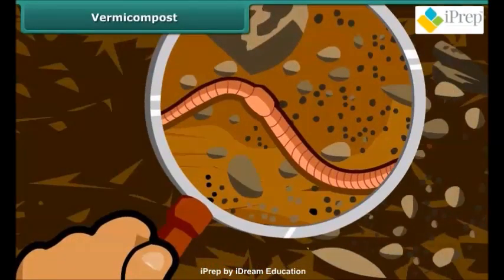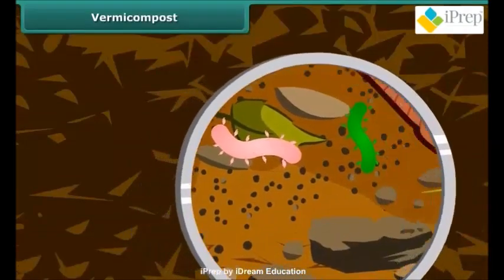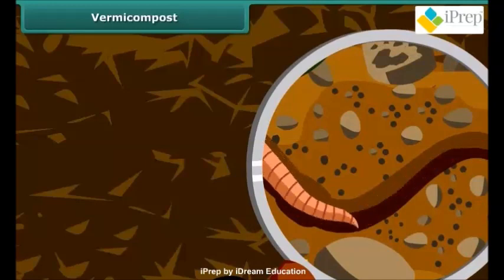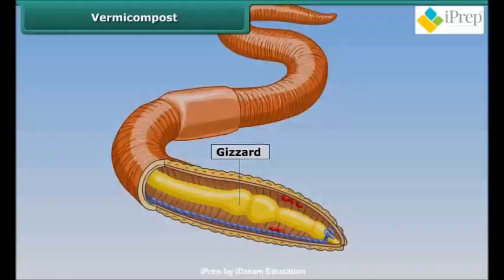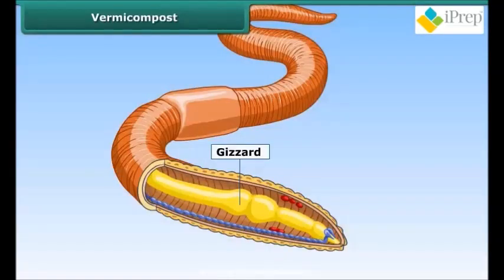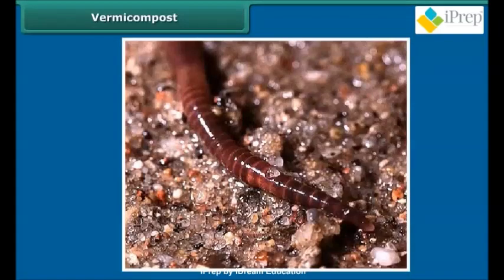Students, you might have seen earthworms in the rainy season. They convert kitchen waste into compost; this is known as vermicomposting. The red worms used in vermicomposting do not have teeth — a special structure called the gizzard is present in them which crushes down the food. These worms cannot live in hot or cold environments, therefore moisture is required in the formation of vermicompost.